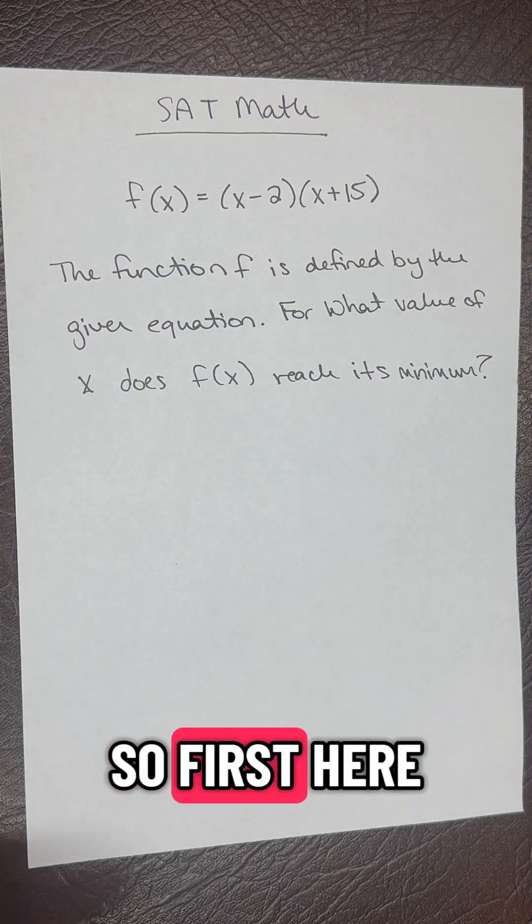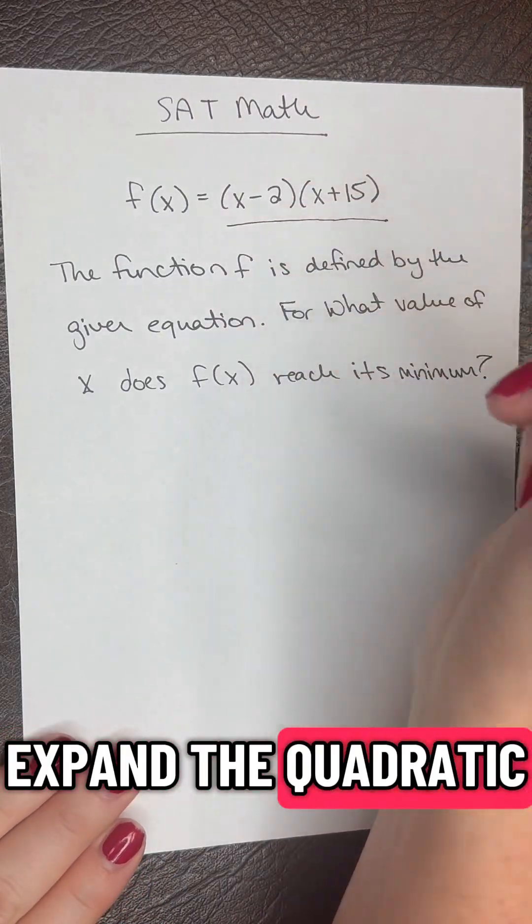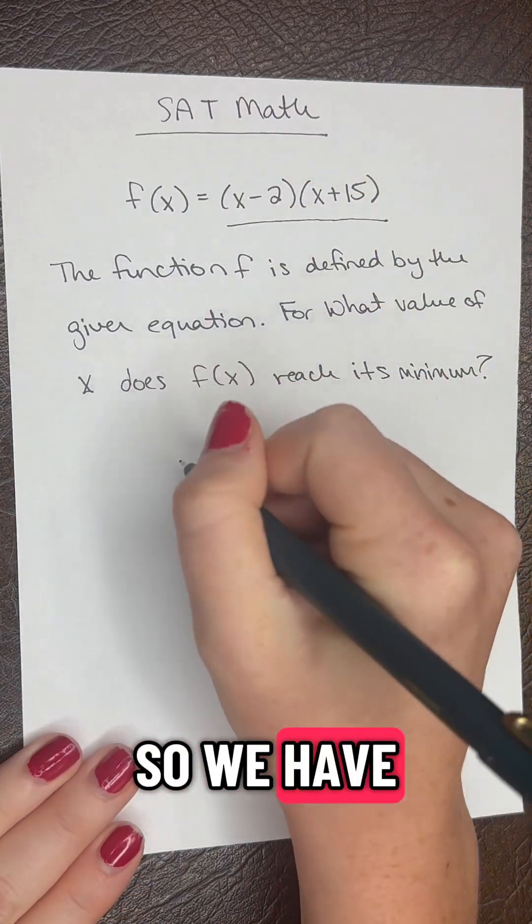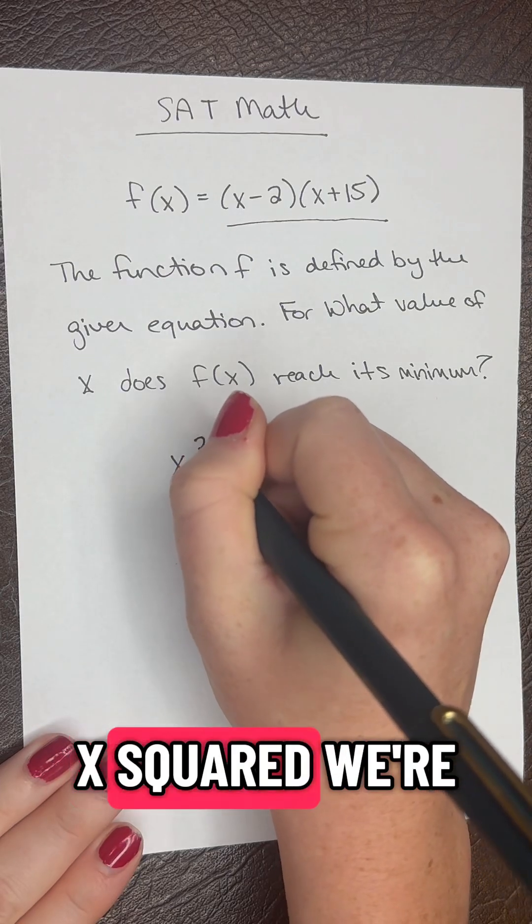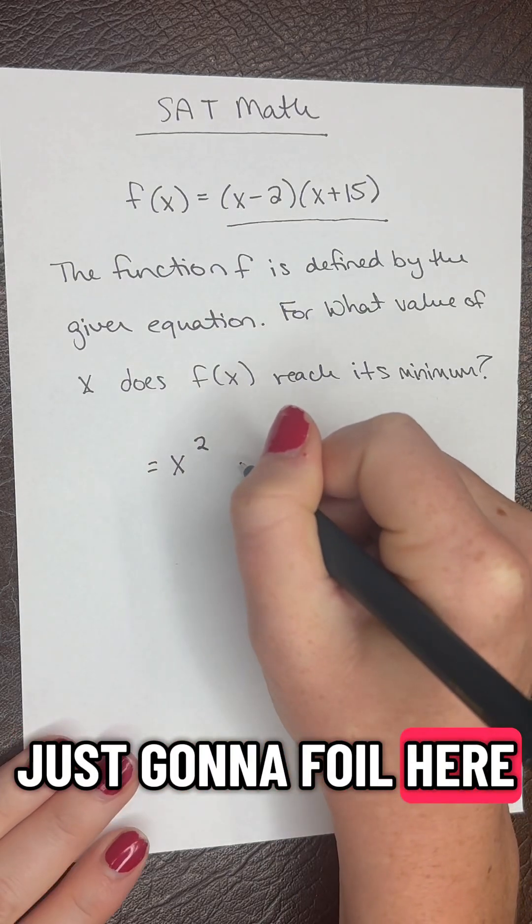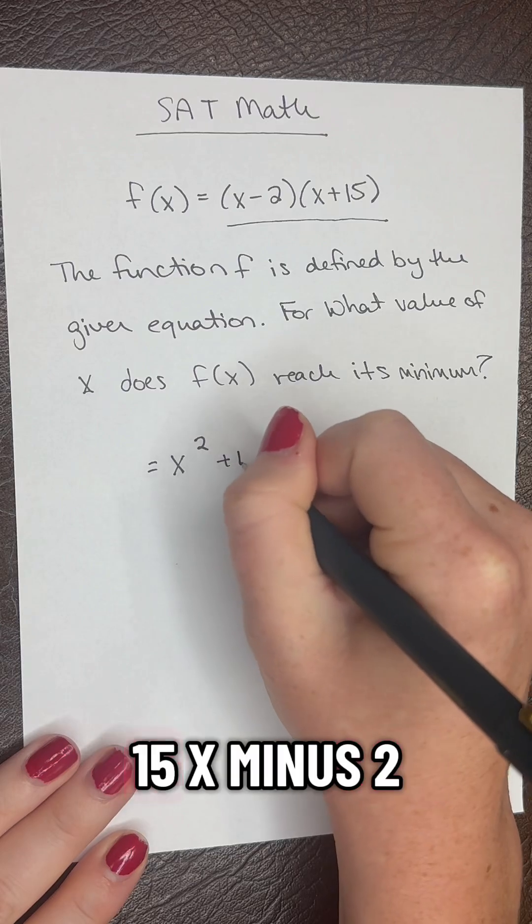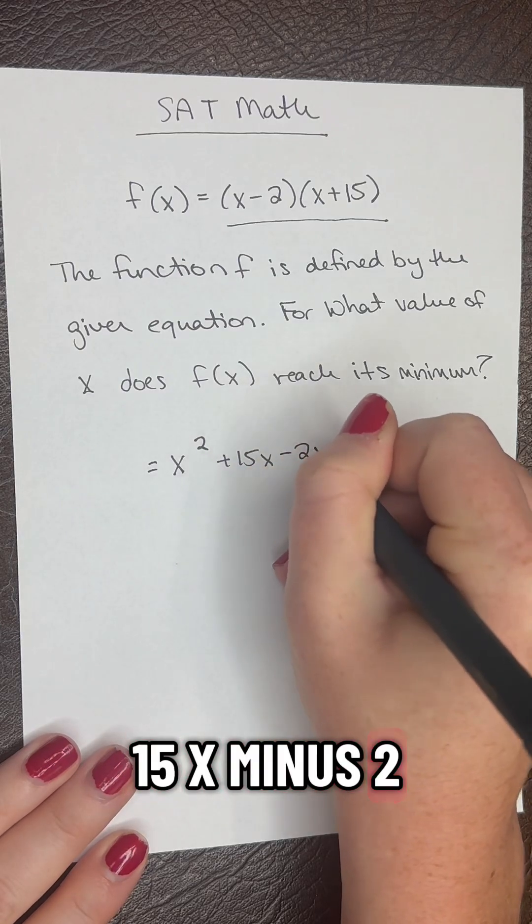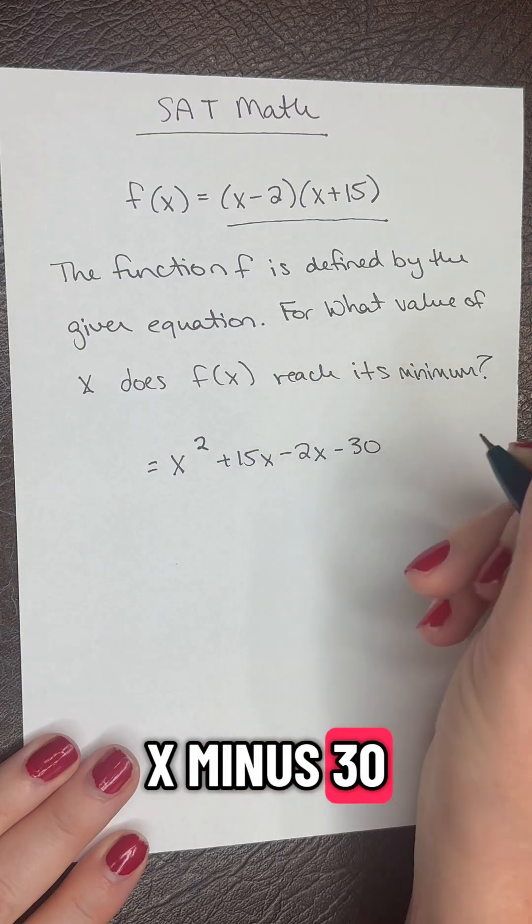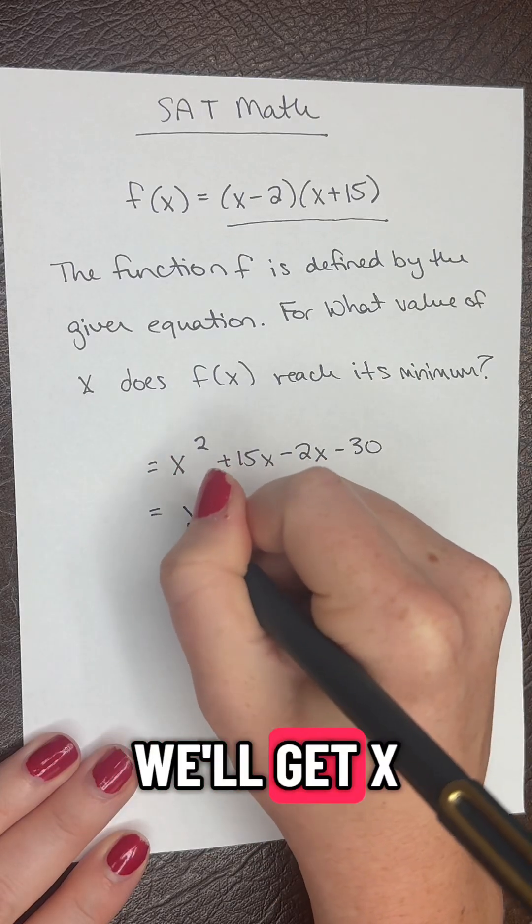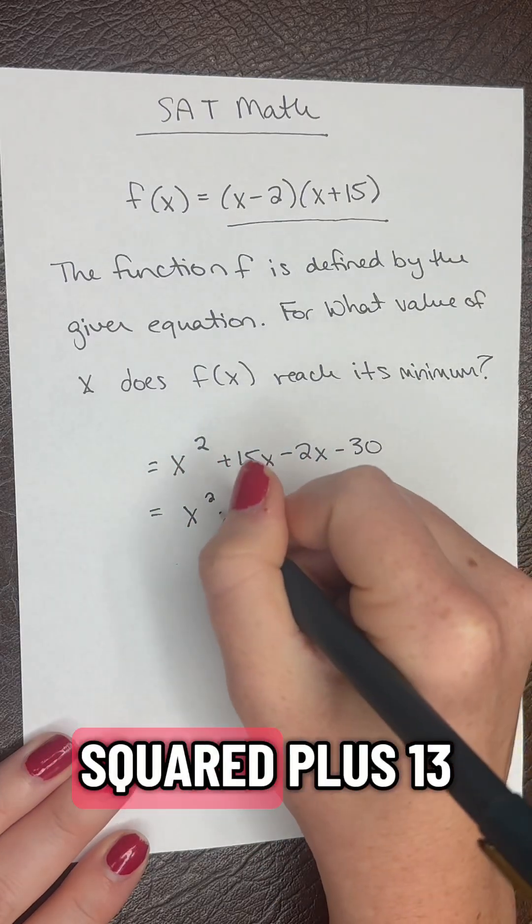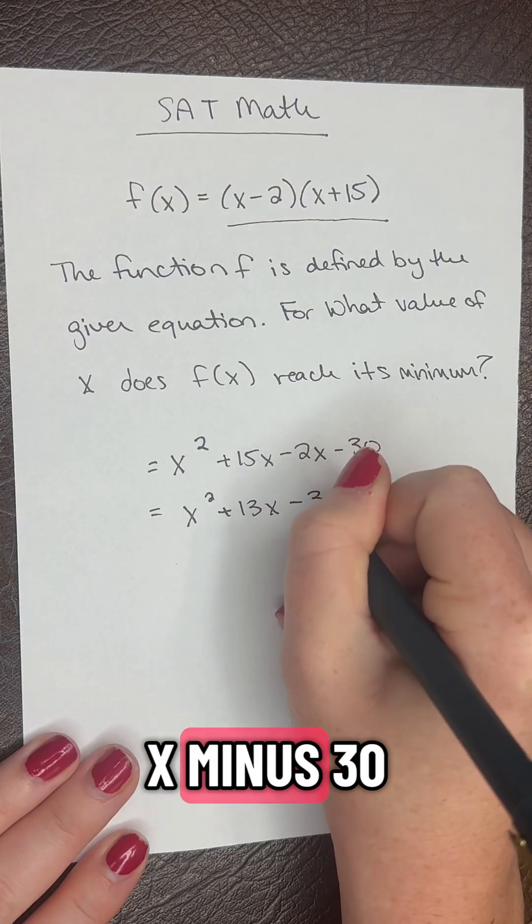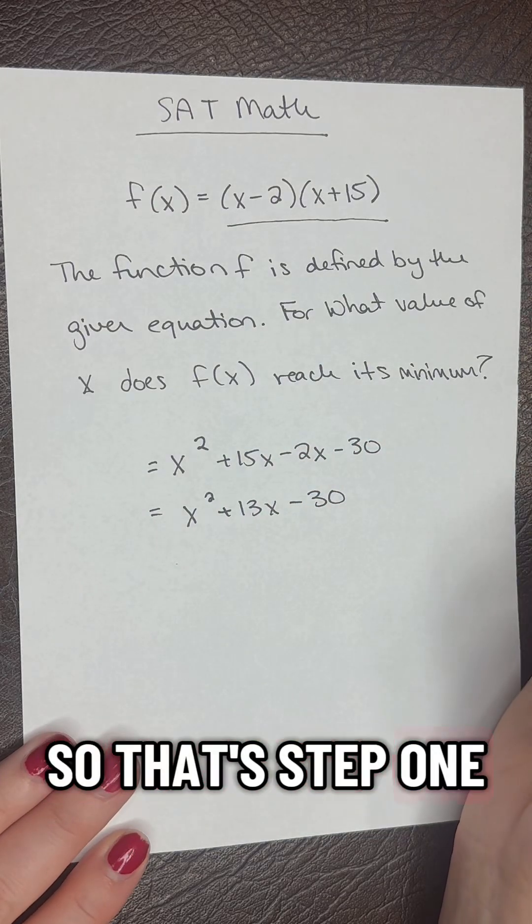First we need to expand the quadratic. We have x squared, we're just going to FOIL here, then plus 15x minus 2x minus 30. We'll simplify that and get x squared plus 13x minus 30. So that's step one.